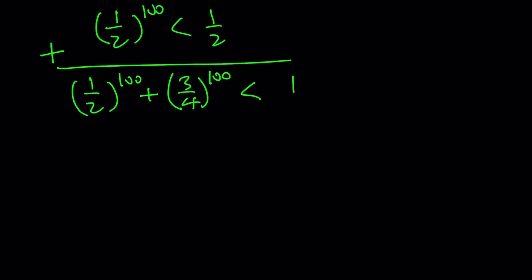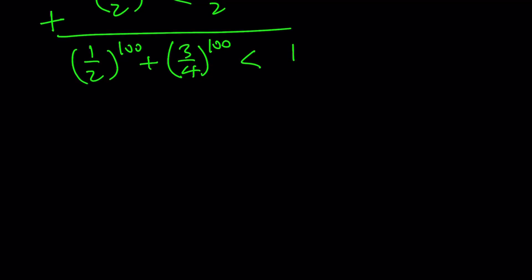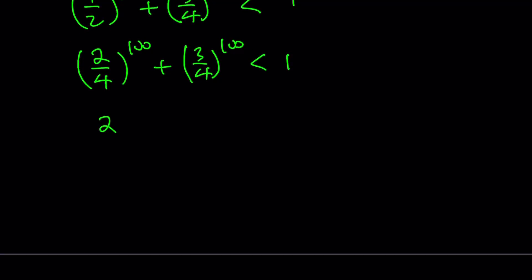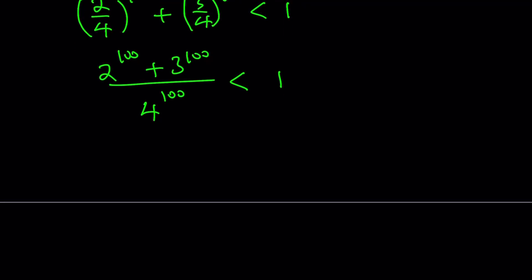My goal is to make a common denominator and add these two fractions. I don't have a common denominator, so let's change 1 half to 2 fourths. Now we can add them because they have a common denominator. So that's going to be 2 to the power of 100 plus 3 to the power of 100, divided by 4 to the power of 100, and that's going to be less than 1. Since 4 to the power of 100 is a positive number, we can multiply both sides by that, and that gives us the same result we got with the first approach.